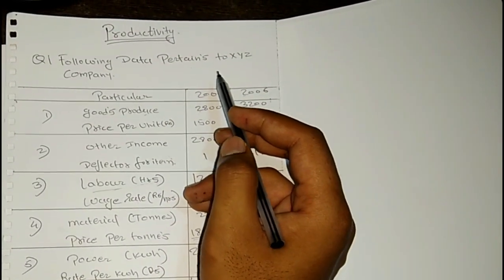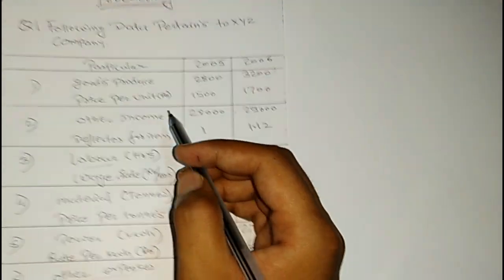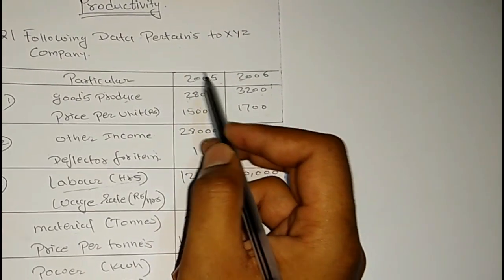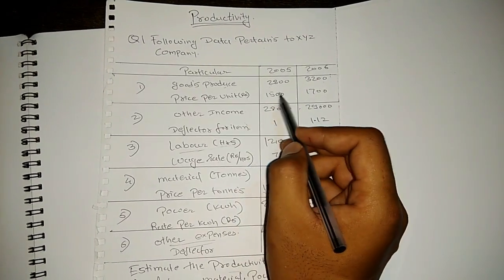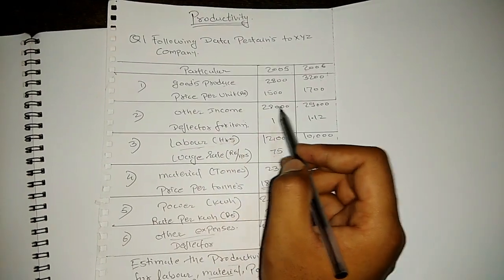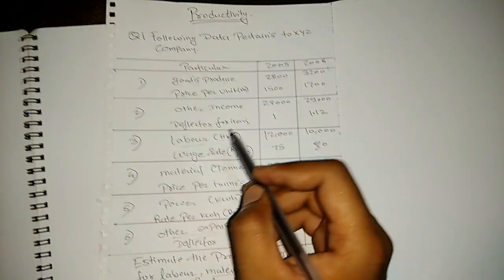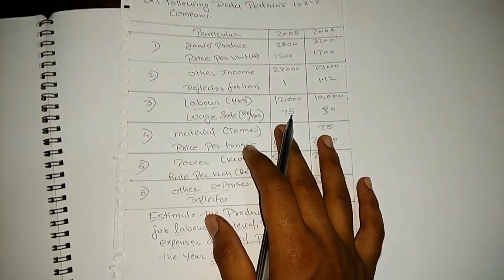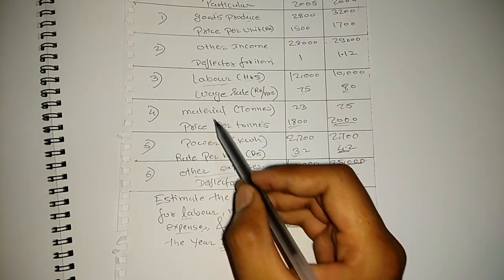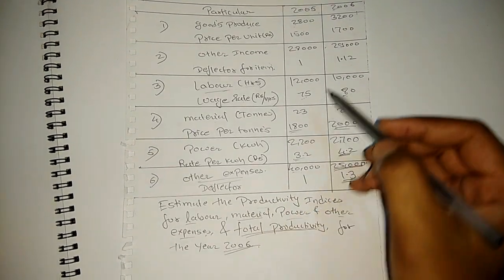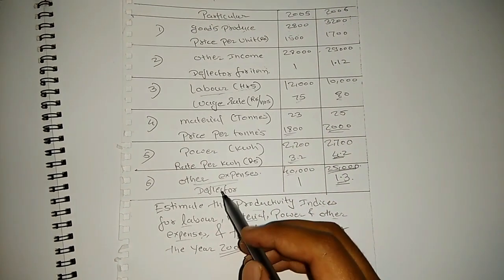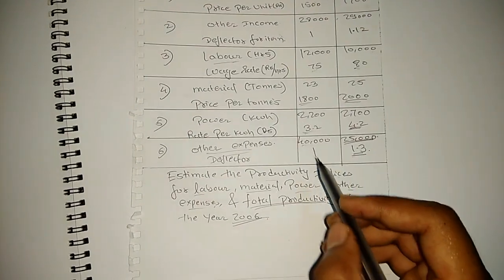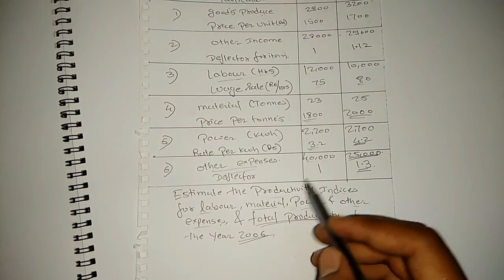The data of a certain XYZ company is given. Good produce for the years 2005 and 2006 is given. Other incomes of the company are given for both years. The deflector for the other income is given. The inputs supplied — that is labor, material, power, and other expenses — are given, along with their values.